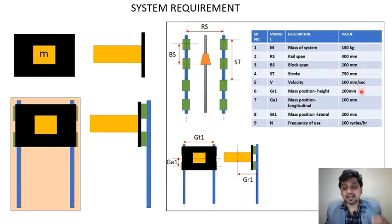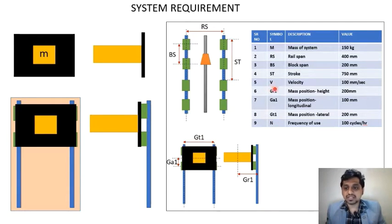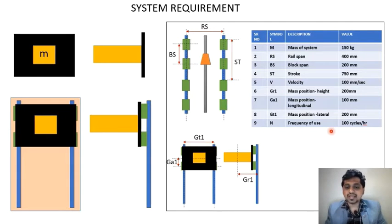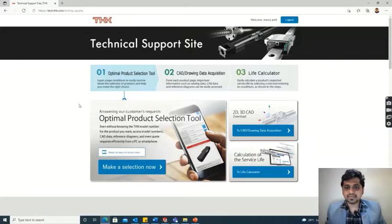We have assumed the speed as 100 mm per second. The geometrical aspects include the total mass of the body acting through points in the lateral direction, longitudinal direction, and height — three distances in space representing the mass center of the system. Then we have the frequency of use, which is very important for deciding the life cycle of the LM rails, since frequent movement affects the life of the balls inside. With these system inputs, let's select our LM rail using the calculator.